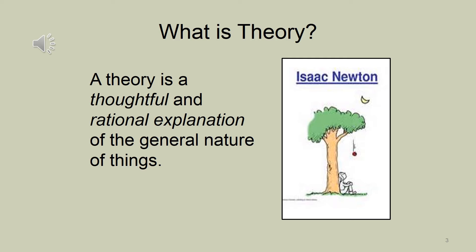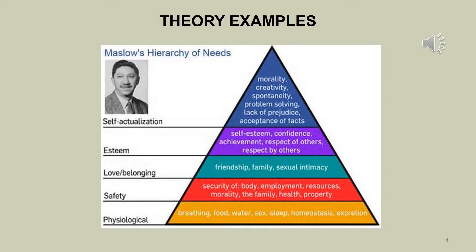So what exactly is a theory? A theory has been described as a thoughtful and rational explanation of the general nature of things. An example of a theory would be Maslow's hierarchy of needs, which you've probably already covered in another class. This theory basically says that we have to have some baseline things — physiological, safety, love, belonging, and esteem — before we reach self-actualization, and that these things build upon one another.